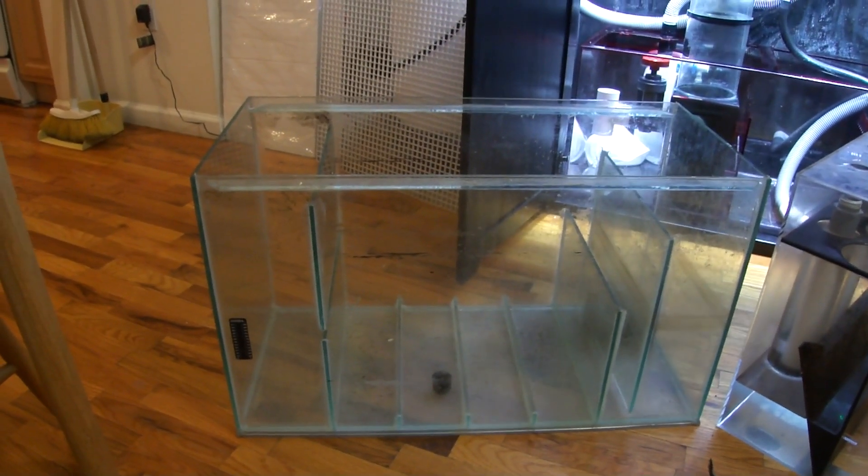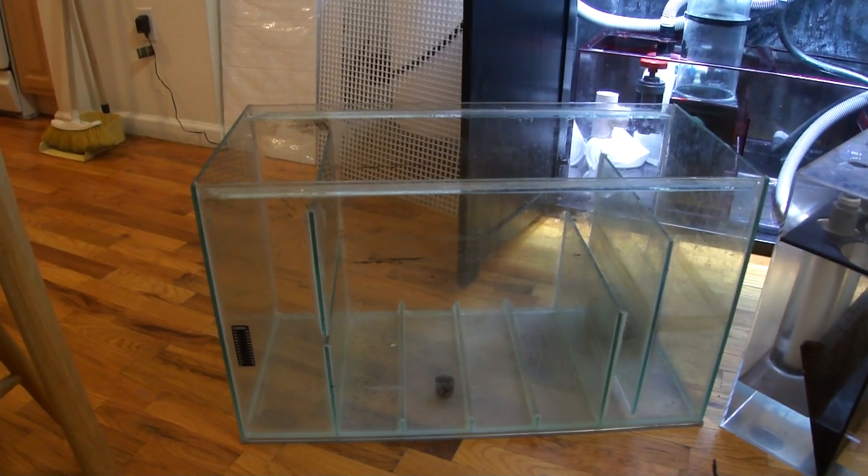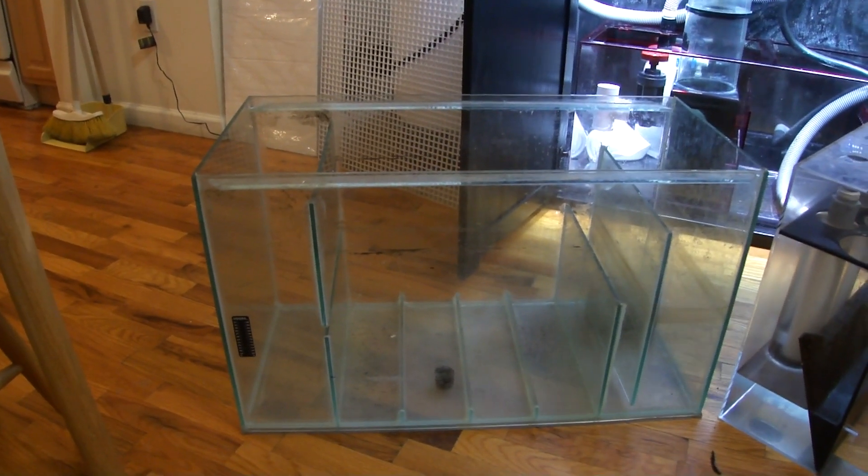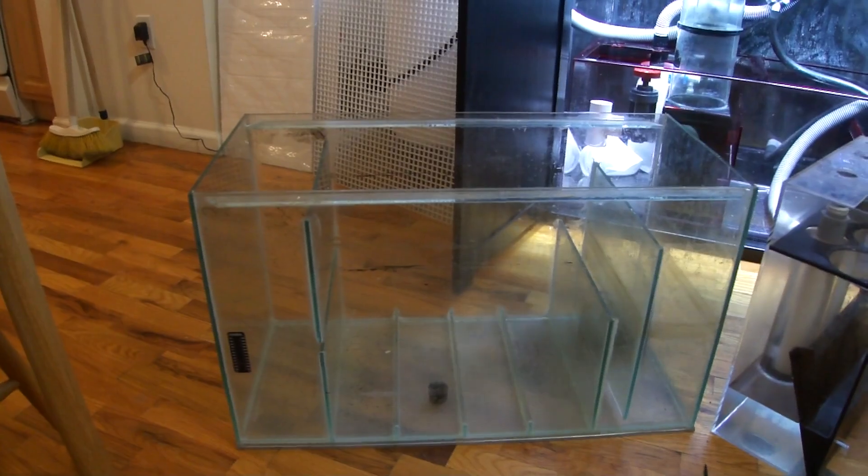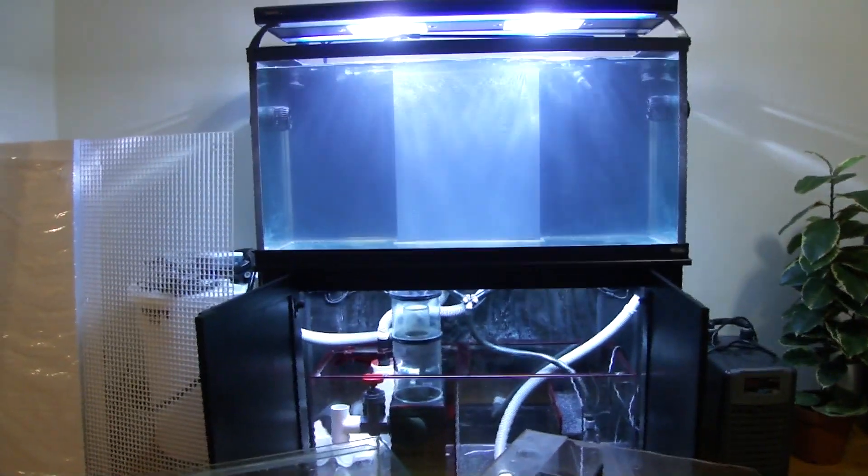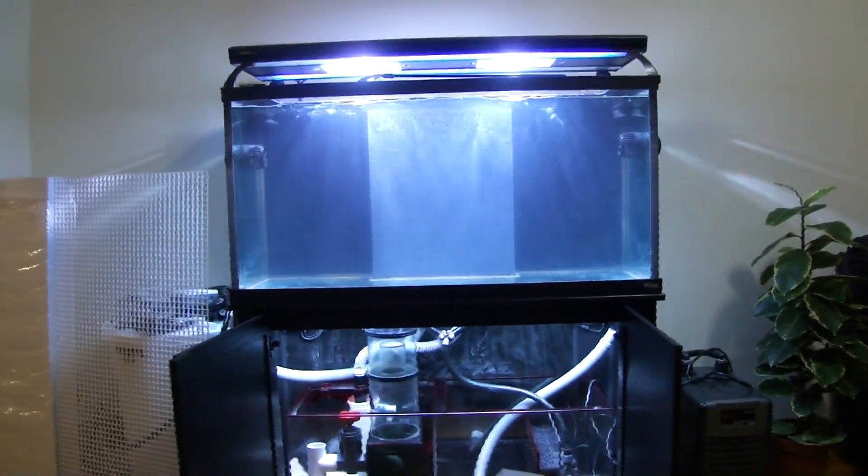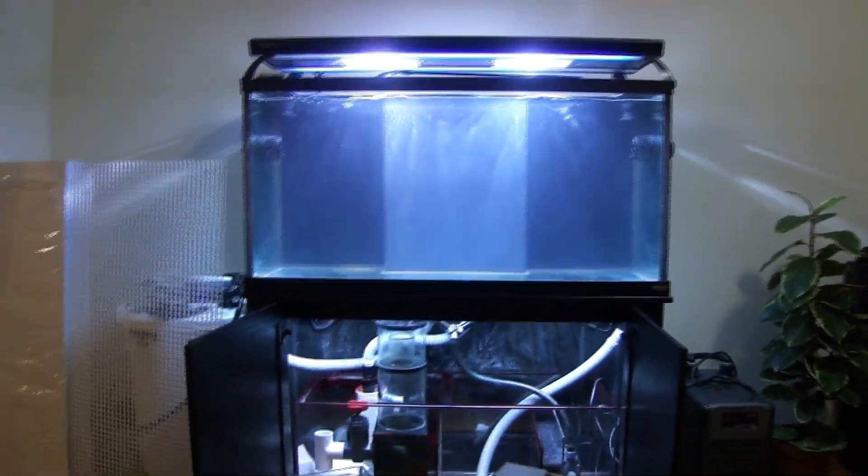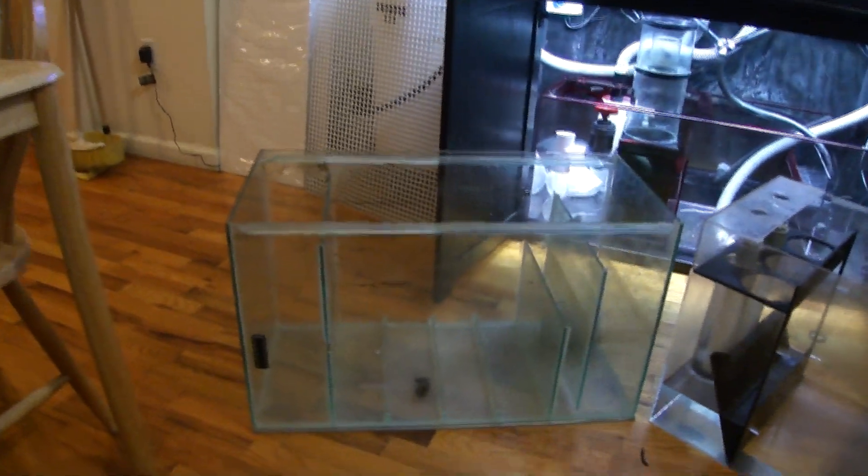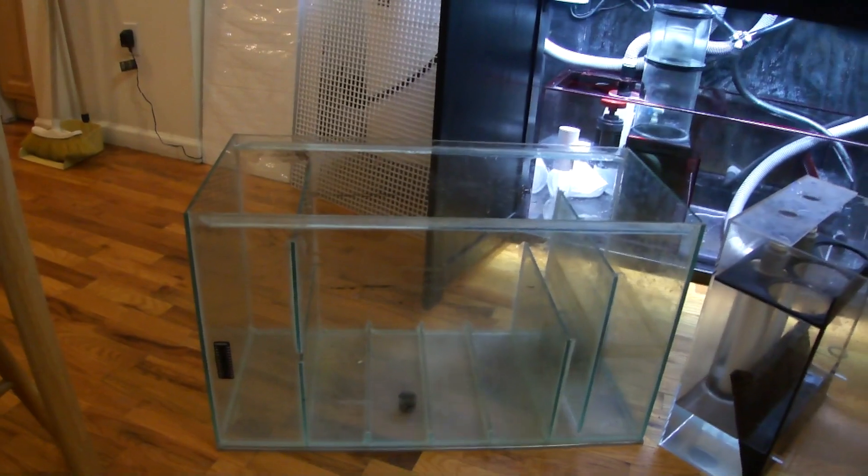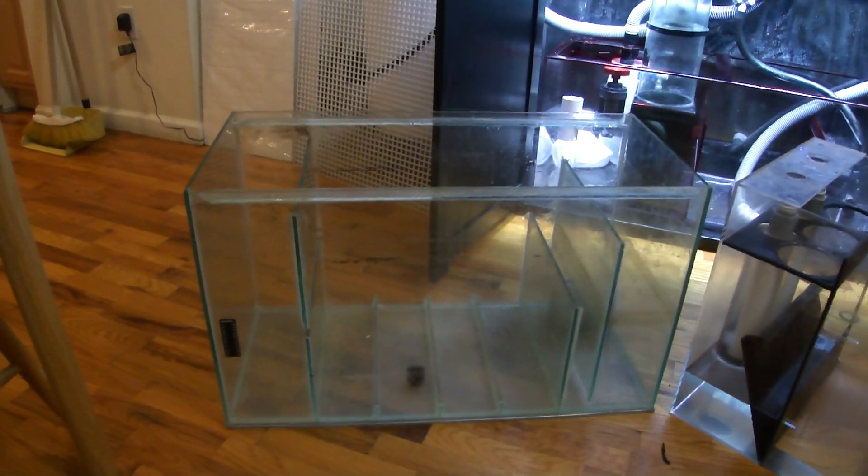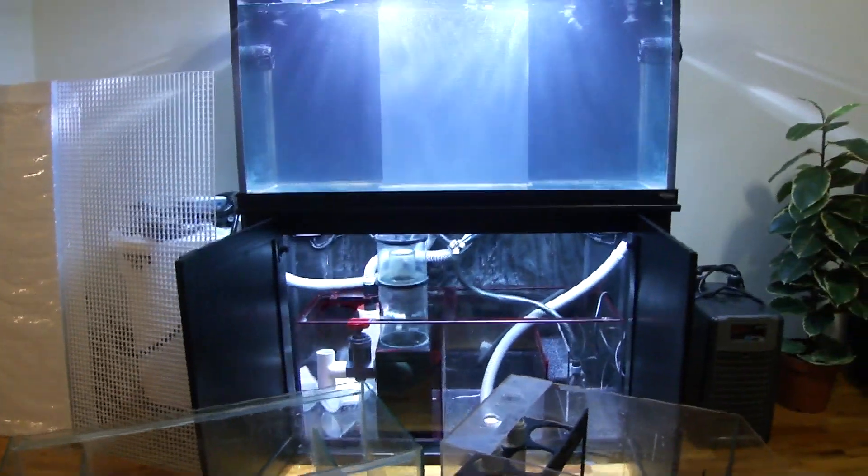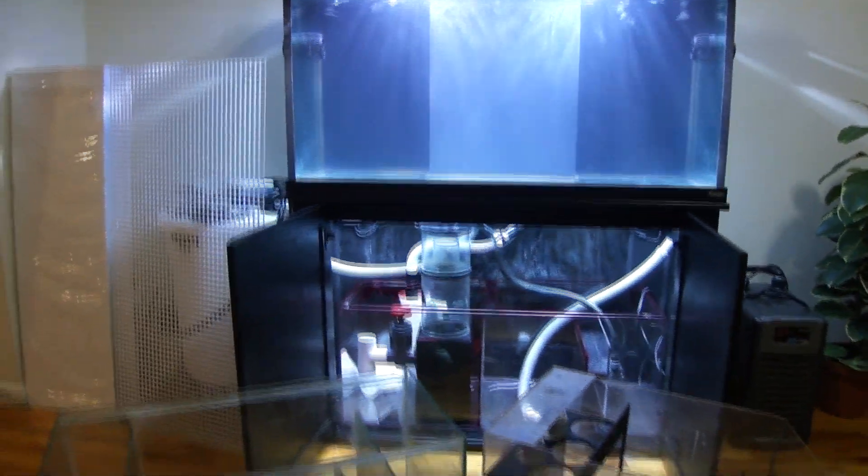When it comes to reef aquarium filtration, the best option that you can have is to have a sump refugium. A sump in simple terms is basically a separate reservoir that allows you to have all of the equipment below, hidden from the main display. The refugium is exactly what it's called, a refuge area for plants and animals that would otherwise be subjected to predation on your main display.